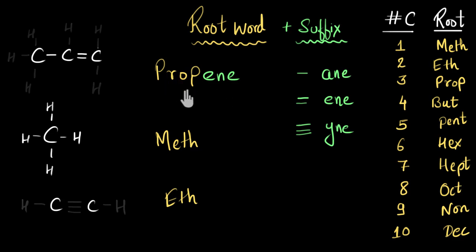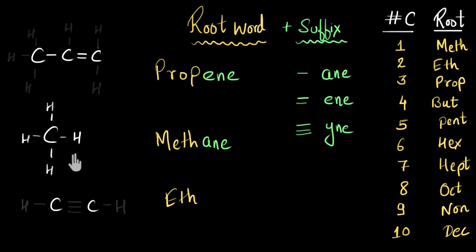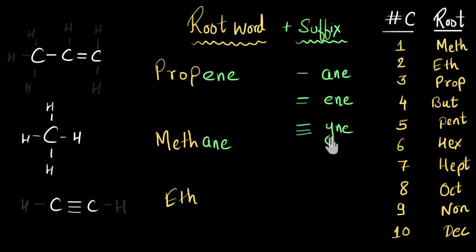So the name is 'propene.' Now looking at the molecule with only one carbon atom — for alkene and alkyne you need a minimum of two carbon atoms, so this is definitely an alkane. For alkanes the suffix is '-ane,' making the name 'methane.' For the third example, there is a triple bond between the carbon atoms, so this molecule belongs to the alkyne family and gets the suffix '-ine.' The name of this molecule is 'ethyne.'